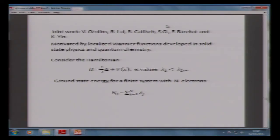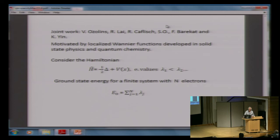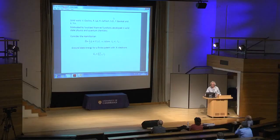This is joint work with Vidvid Ozoliņš, Rongjie Lai, a bunch of other people, Russ Caflisch, and some post-docs and graduate students. This is motivated by what's called Wannier functions, developed in physics and quantum chemistry. Take the Schrödinger problem: (1/2)Laplacian U plus V(x)U equals lambda U — physicists put a one-half for some reason — with eigenfunctions phi giving the ground state energy for a finite system of N electrons. You get that by solving a variational problem to get eigenfunctions of the Laplacian plus V. But you get functions phi which are densely supported: if V was zero, you're going to get sines and cosines, which are pretty densely supported, and physicists don't like that.